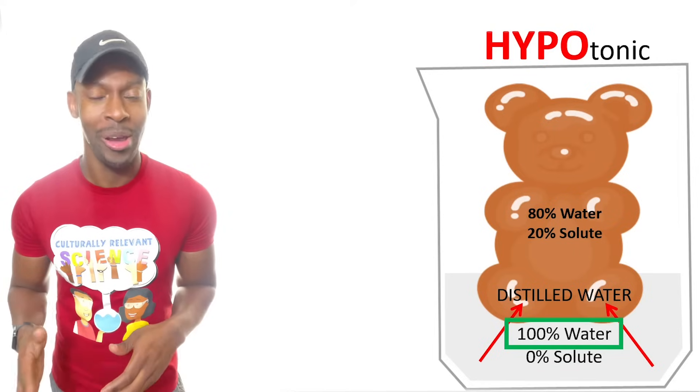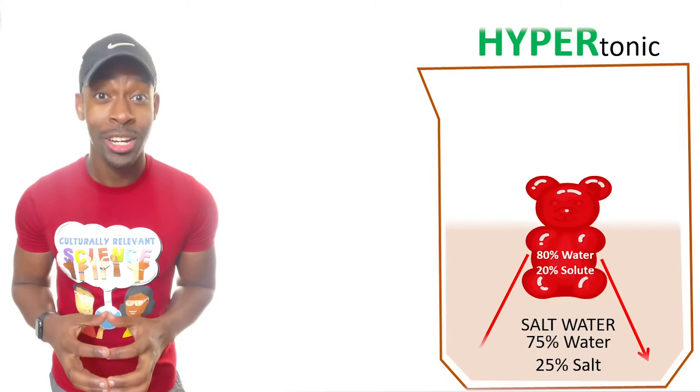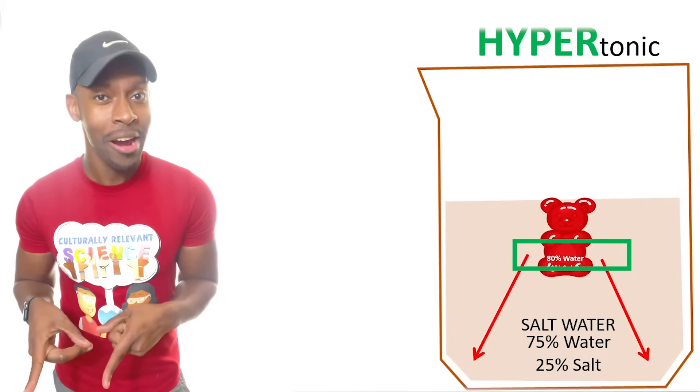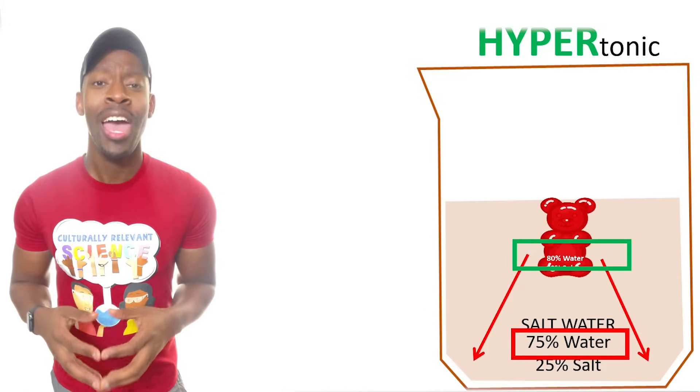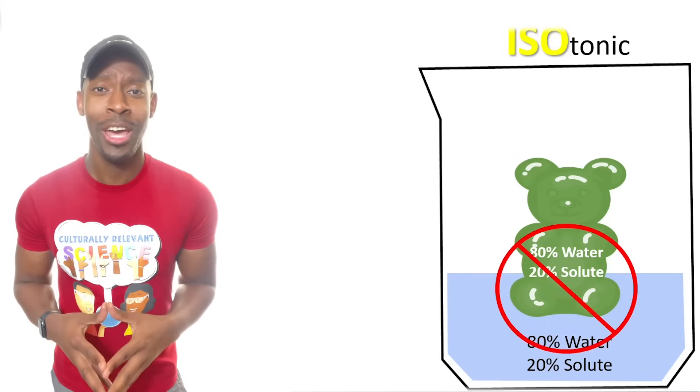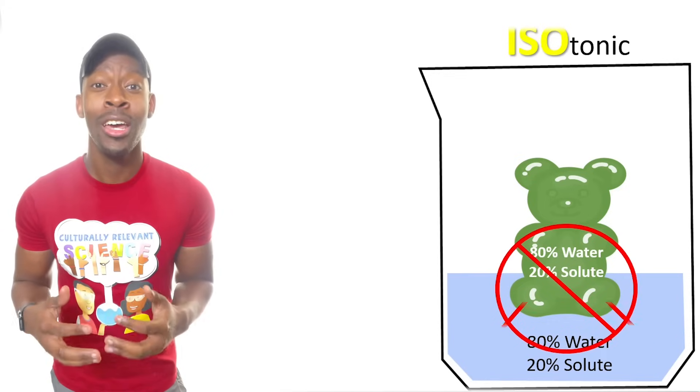When the bear is placed into the salt water solution, the bear would shrink because there's a higher amount of water in the bear compared to the salt water. And in an isotonic solution, the bear would stay the same. Water will flow equally in and out, causing it to be in equilibrium.